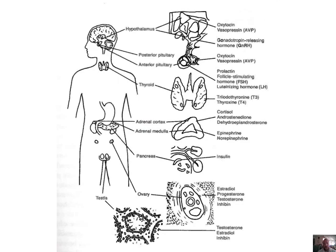We have the hypothalamus, which releases oxytocin and vasopressin — I'm not worried about vasopressin, more about oxytocin. We'll go over what all of these do a little bit later. The base of the hypothalamus also produces gonadotropin-releasing hormone, which indicates to the body when it needs to produce its gonad hormones.